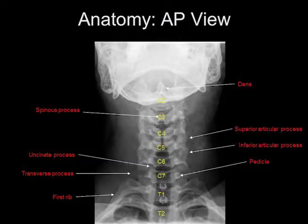You can also see the medial aspects of the first few ribs. And remember again, when you're counting the vertebral bodies, the first fully formed vertebral body you see is C2, not C1.